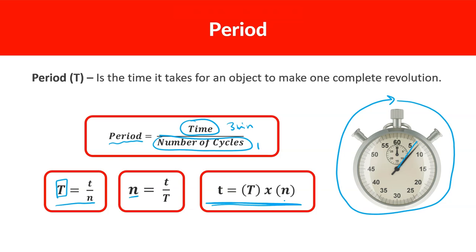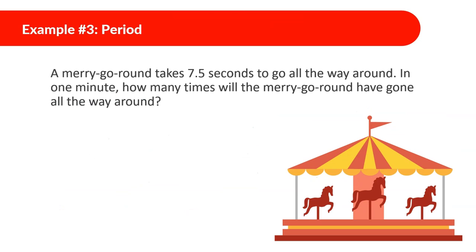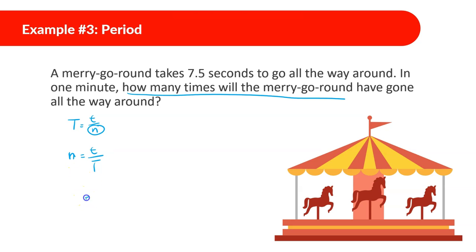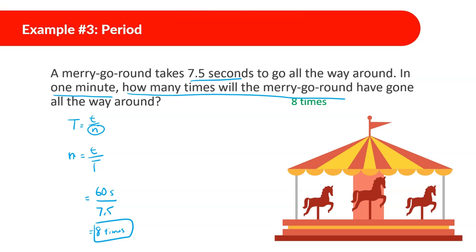A merry-go-round takes 7.5 seconds to go all the way around. In one minute, how many times will it go around? We use: number of cycles equals time divided by period. The time is one minute, which is 60 seconds, divided by 7.5 seconds. So 60 divided by 7.5 equals 8 times — the merry-go-round goes around 8 times in one minute.